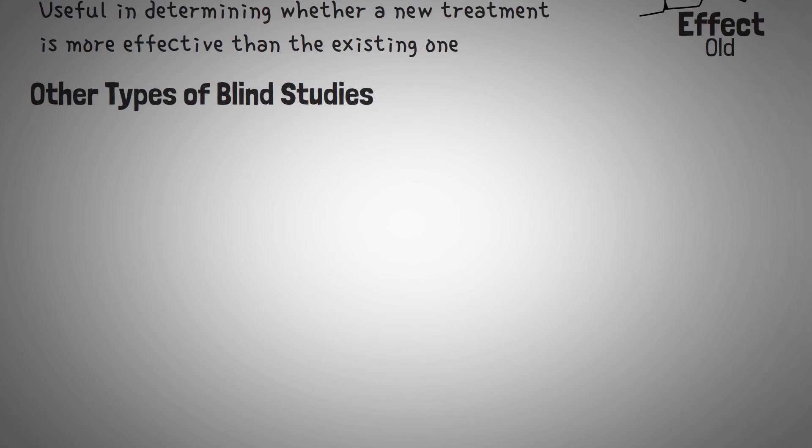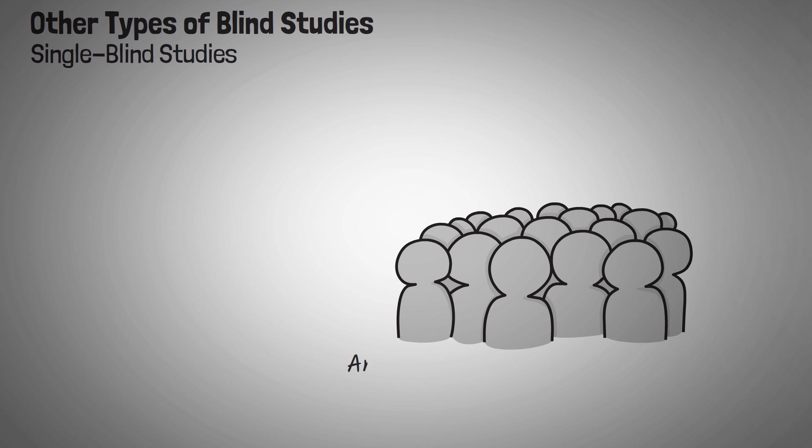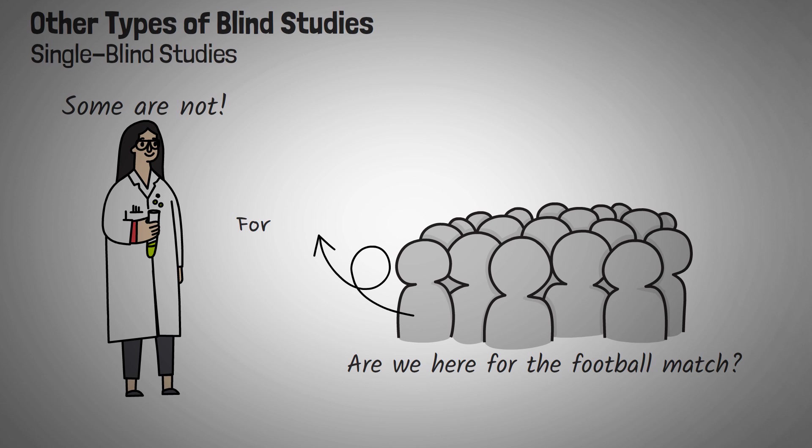There are also single-blind studies. In single-blind studies, only the participants are not informed whether they are receiving the real treatment. Thus, they are the only blind ones in the experiment. The experimenters, on the other hand, know which participants belong to which group. As we mentioned before, the problem with this is the experimenter bias.